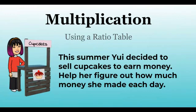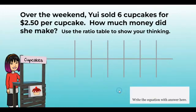Summer — I'm thinking nice warm summer days, looking out upon all this snow I have now! For this activity we're going to be selling stuff. I've got my friend Yui here, and she decided to sell some cupcakes to earn money — maybe she's giving it to her local dog shelter. Over the weekend, Yui sold six cupcakes for two dollars and fifty cents.